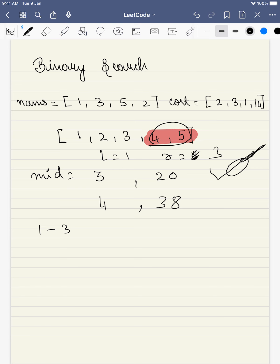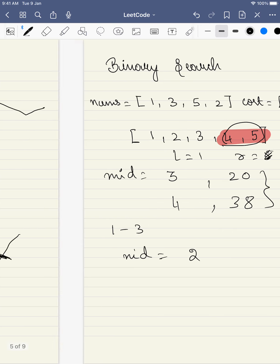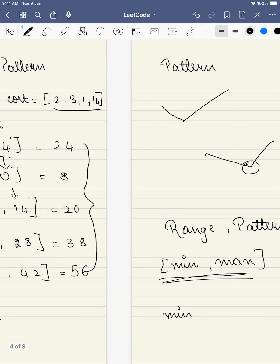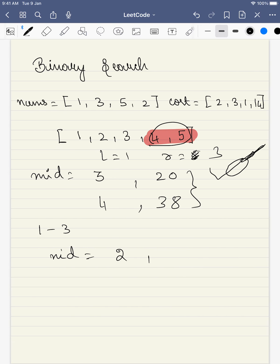Our answer will be in the range of 1 and our right will become equal to 3 now. So what is the mid value now? It is equal to 2. Again, we can find the same approach. For 2, the cost is 8, and for 3 it's 20.